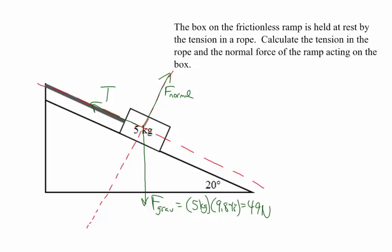Our two unknown forces — the tension and the normal force — rather than needing to break those into components, one of them is only acting parallel to the ramp and one is only acting perpendicular to the ramp. That makes things much easier.